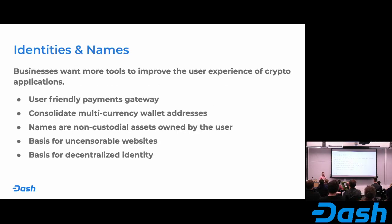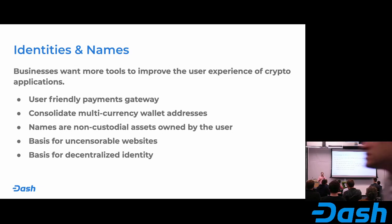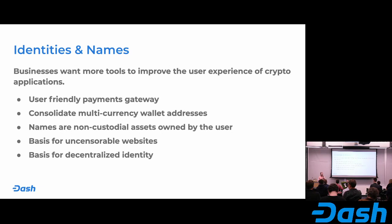There are several use cases around identities and names, mostly involving making cryptocurrency much easier to use — so no one has to remember an address. Early on, Dash Platform Name Service will just resolve identities to usernames, but we have the ability to extend that functionality by resolving website domains and other content. It's very flexible: we can essentially resolve Ethereum addresses and other cryptocurrency addresses through Dash Platform Name Service.